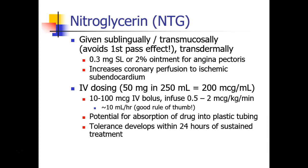When we give IV nitroglycerin, it usually comes in a glass bottle — 50 milligrams in 250 mLs, which is 200 micrograms per milliliter. If you're going to give a bolus, you always want to start small, especially in an anesthetized patient — as low as 10 micrograms, up to maybe 100 micrograms, as an IV bolus. Then usually we run this drug as an infusion, anywhere between 0.5 and 2 micrograms per kilogram per minute.